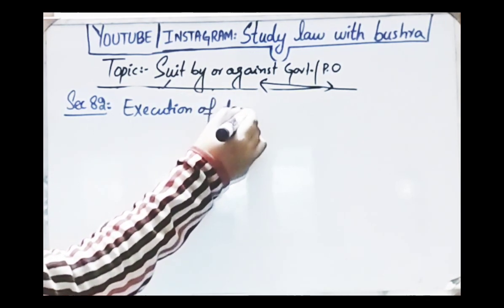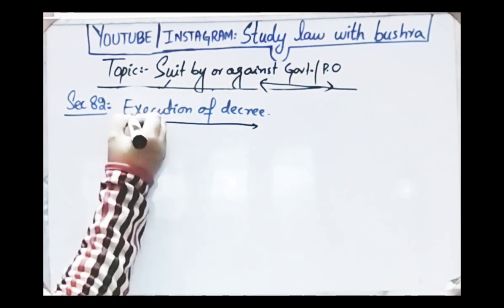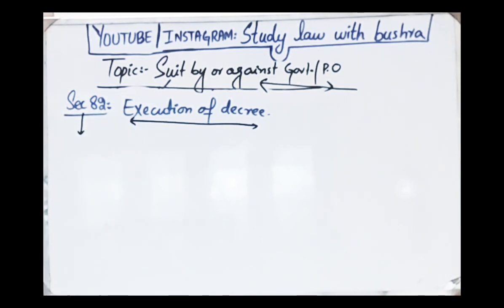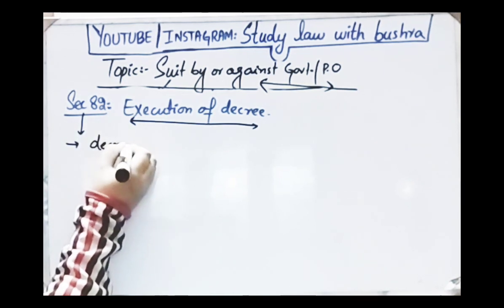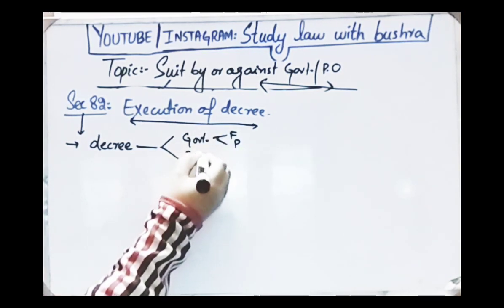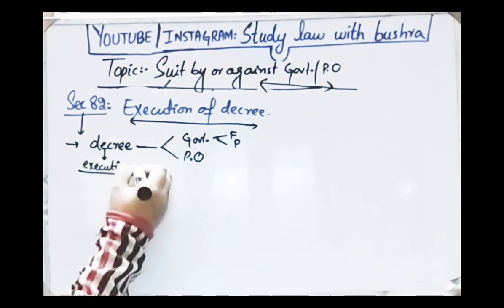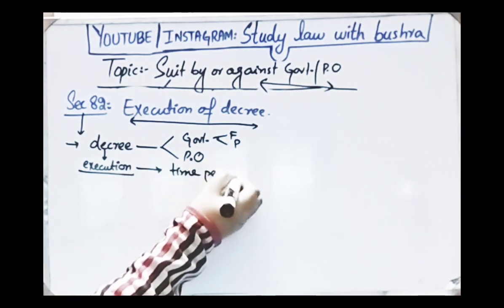The last section of today's discussion is section 82, which talks about execution of the decree. If a decree is passed against the government or a public officer, how will it be executed? Section 82 subsection 1 states: where the decree is against the government or against the public officer in respect of any act as aforesaid, a time shall be specified in the decree within which it shall be satisfied, and if the decree is not satisfied within the time so specified, the court shall report the case for the orders of the government.